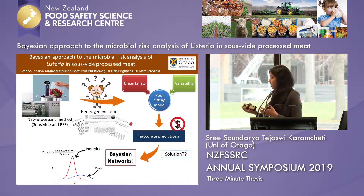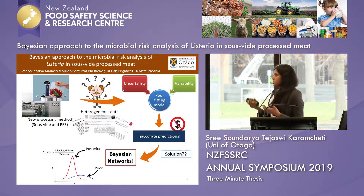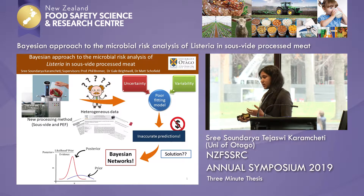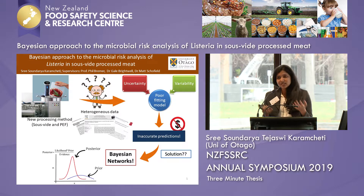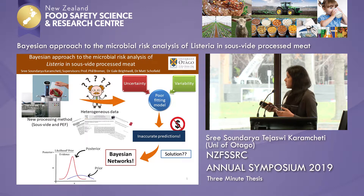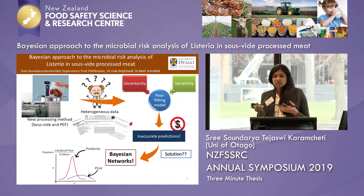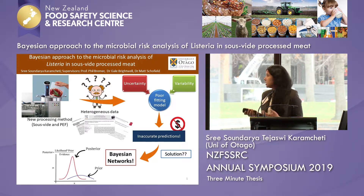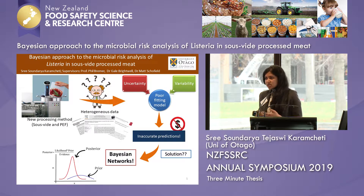Despite there being a wide variety of data available in the literature, it becomes difficult to draw critical conclusions due to the variation in trial designs. To achieve this risk assessment, we can take the help of predictive microbiology that quantitatively describes the microbial behavior in food using mathematical models and statistics. This variation in inactivation and growth rate data is primarily due to uncertainty, which arises due to the lack of knowledge about the parameters due to poorly reported experimental data, and variability, which arises due to the variations in experimental conditions and protocols.